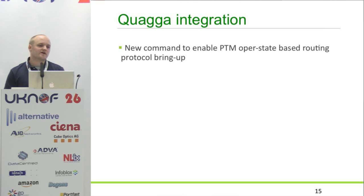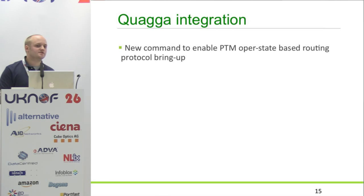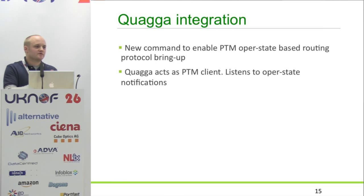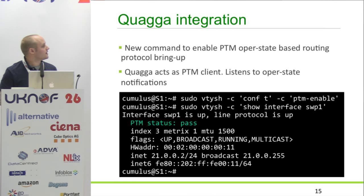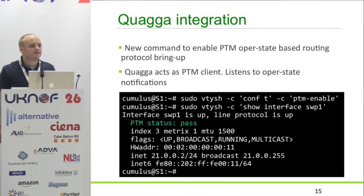We've been looking at Quagga in particular. Say you've got a large data center with 2,000 top-of-rack switches and you want to reduce point-to-point links, so you're using something like OSPF unnumbered interfaces over Ethernet point-to-point, where the switch only ever has a single loopback address using that same /32 on every interface. Because OSPF will come up with any neighbor, we can use PTM to ensure the neighbor at the other end of the point-to-point link is expected. We've got a patch for Quagga where you add PTM-enabled to the top of the config, and then switch port 1 only comes up because the PTM status passed and the neighbor was expected.